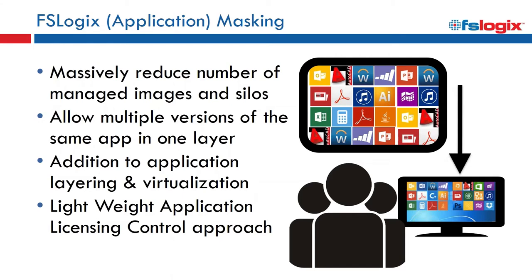For licensing, you need to configure your license terms — defining transfer rates — and report on them. All those features are built into the product for license control. The classic example is Project and Visio. You can configure it so that application masking is used to hide those applications and manage licensing for those products.